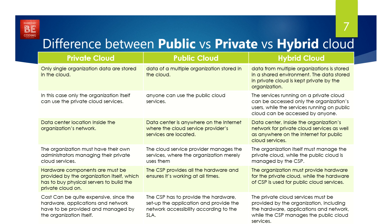Now, the difference between public, private, and hybrid cloud deployment models. First, only a single organization's data is stored in a private cloud. In the case of public cloud, data from multiple organizations is stored in the cloud. In the case of hybrid cloud, data from multiple organizations is stored in a shared environment, while data stored in the private cloud is kept private by the organization.